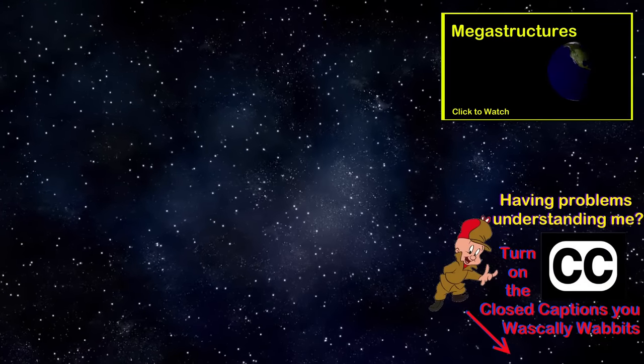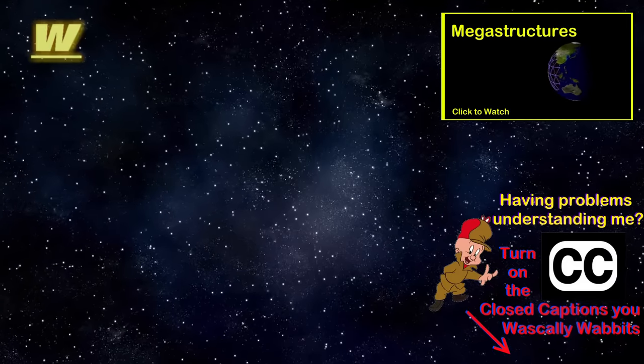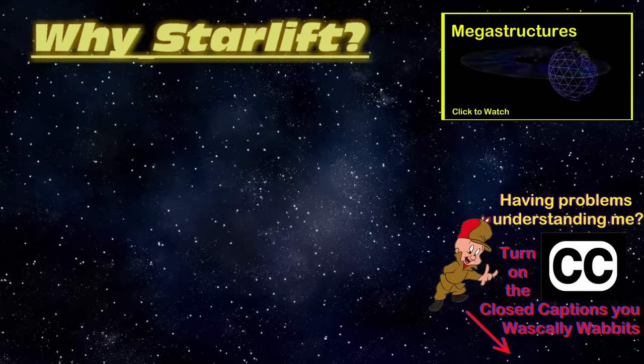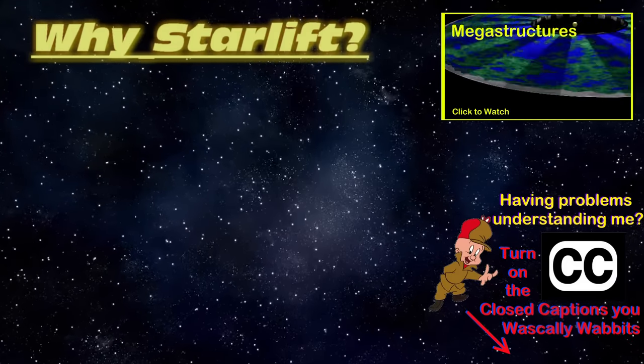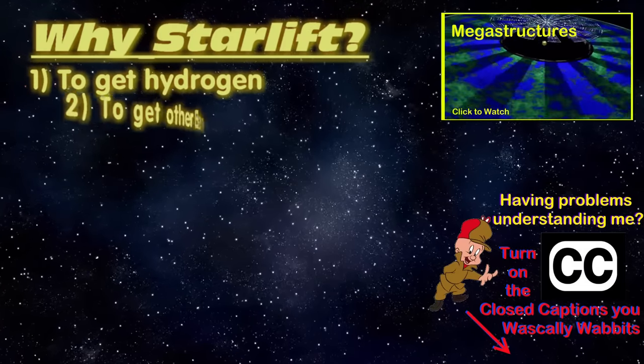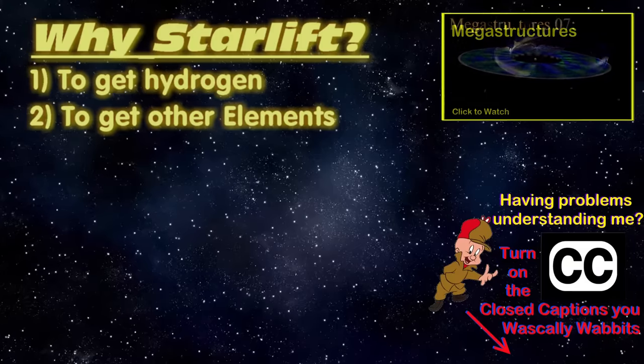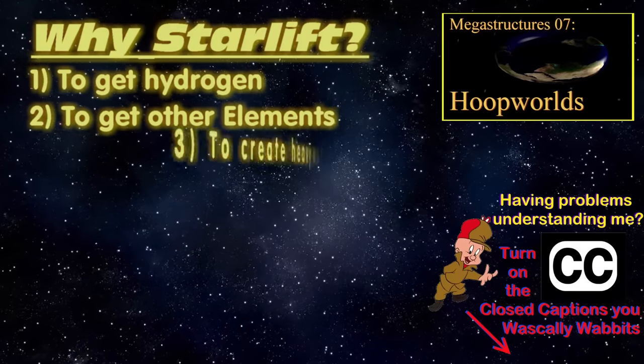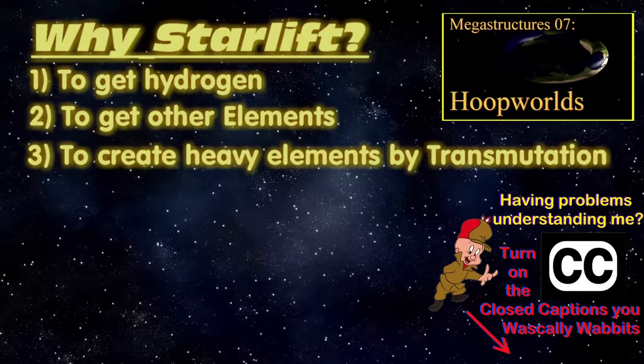Before we jump into how we gather matter from off a star, let's talk about why you would do this. There's basically 7 reasons. Number 1, to get hydrogen from the star. Number 2, to get the other elements from that star. Number 3, to make heavier elements via transmutation.